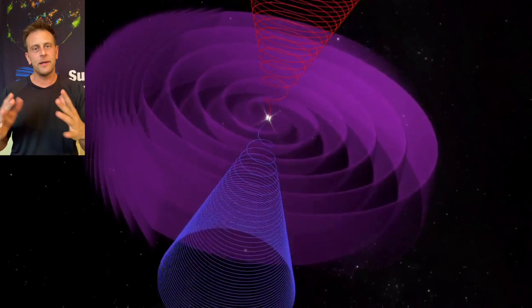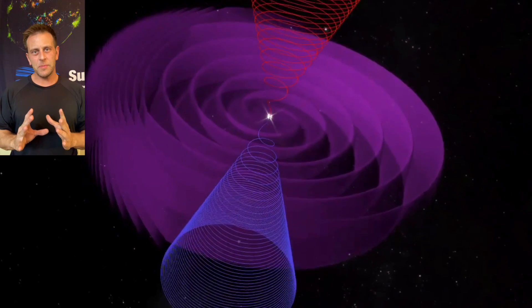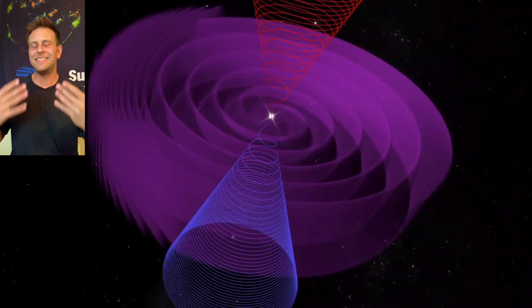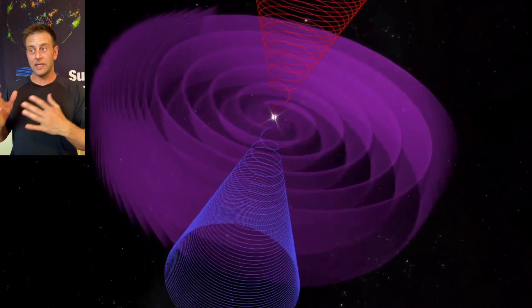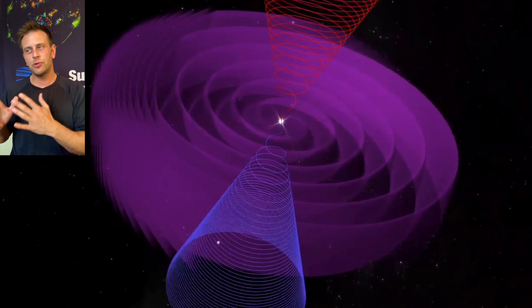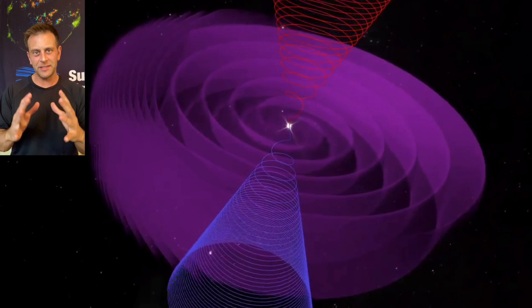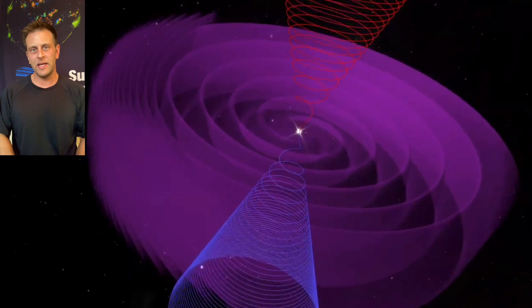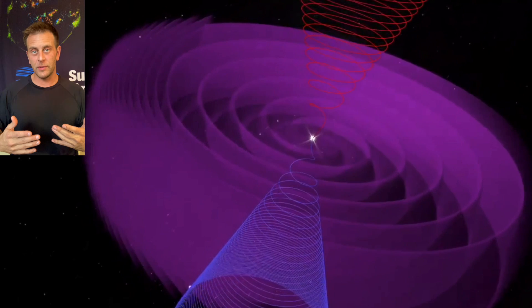But again, this can't happen at sunspot maximum. This has to happen at a deep minimum. The galactic magnetic reversal actually helps to further the minimalization of that solar activity that would prevent the shell from accumulating.